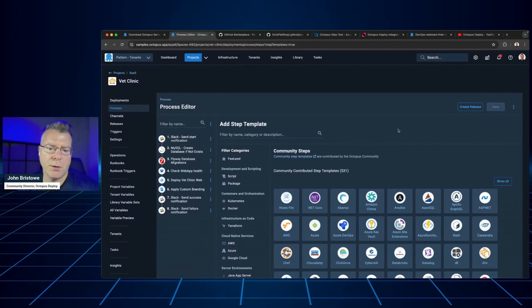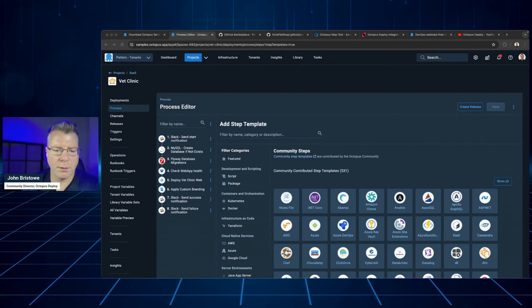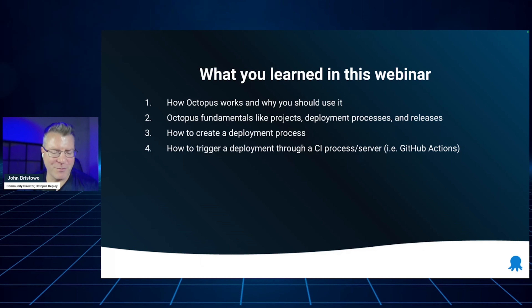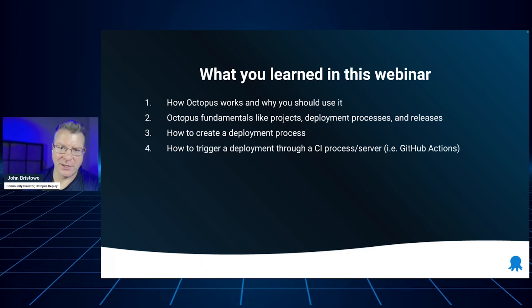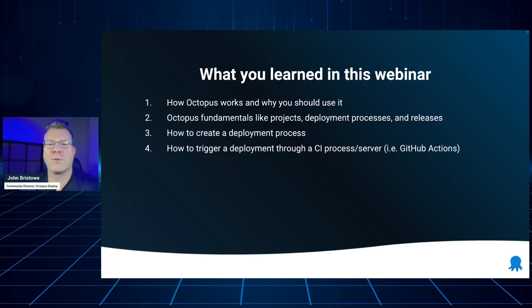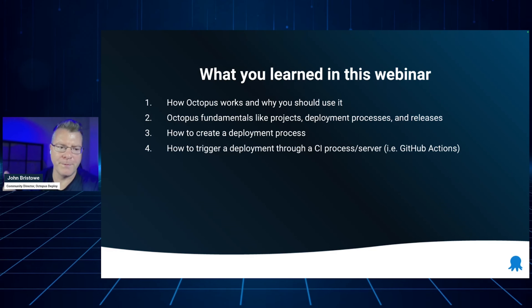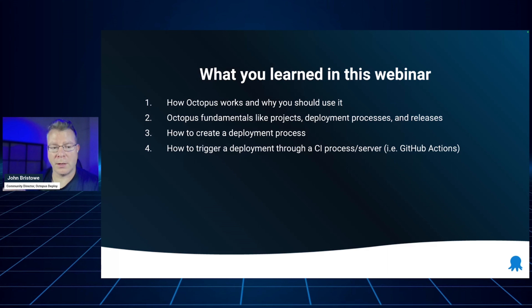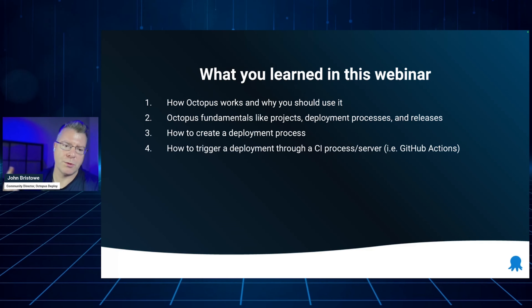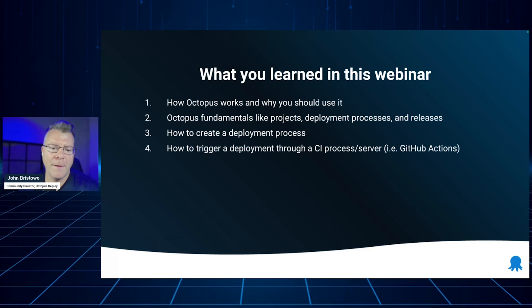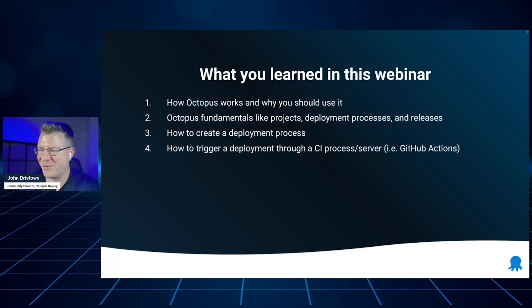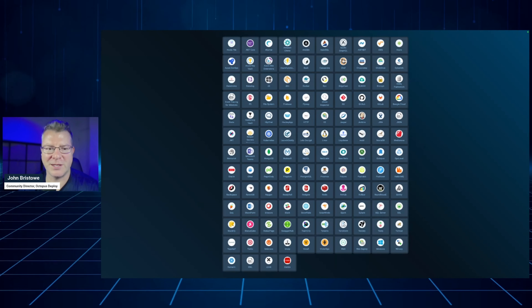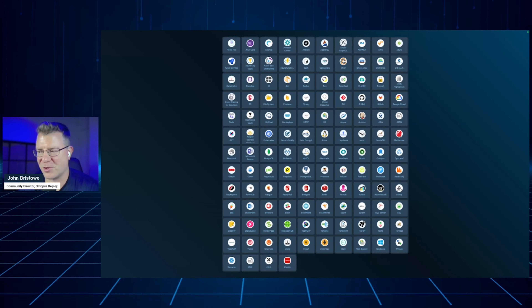That wraps up our time for this webinar. Here's what I hope you learned: how Octopus works and why you should use it, the fundamentals such as projects, deployment processes, and releases, how to create a deployment process from scratch, and how that integrates with a CI process like GitHub Actions. There's a lot more you can do with Octopus Deploy — including over 500 community step templates. If there's a feature we don't support out of the box, the community likely has it covered.